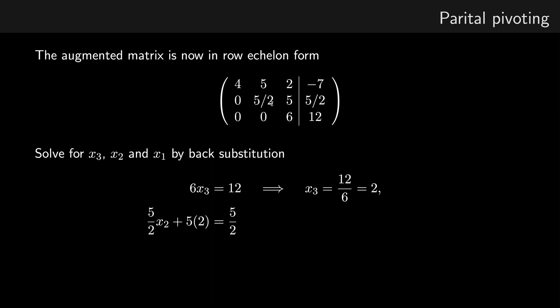This second row gives 5 over 2x2 plus 5 times x3. Well, I already know x3 is 2, and that equals 5 over 2. So simple rearrangement, and we find that x2 is equal to minus 3.